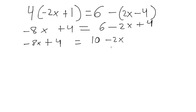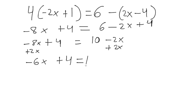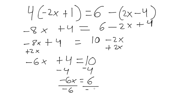Step 4 is isolate the terms with the variable to one side, so I'm going to add 2x to both sides. We get negative 6x plus 4 equals 10. Still in step 4, subtract 4 from both sides, giving us negative 6x equals 6. Now step 5 — get the variable by itself — so divide by negative 6 on both sides, and x equals negative 1.